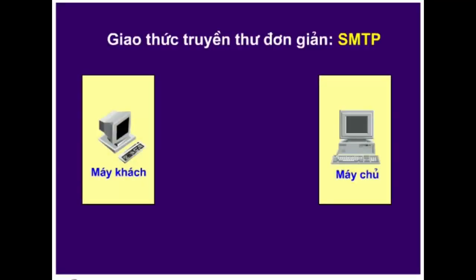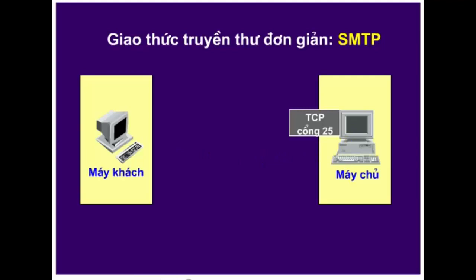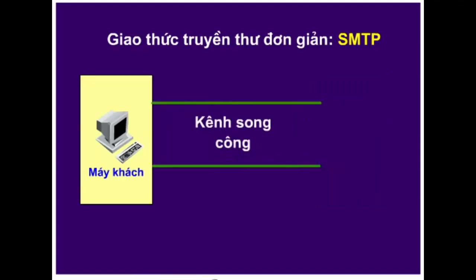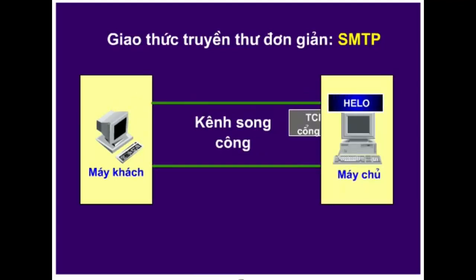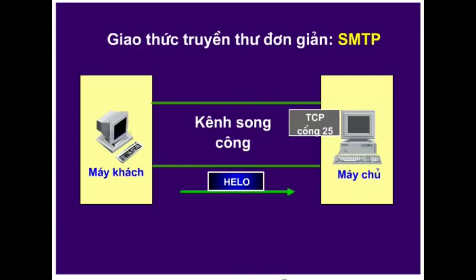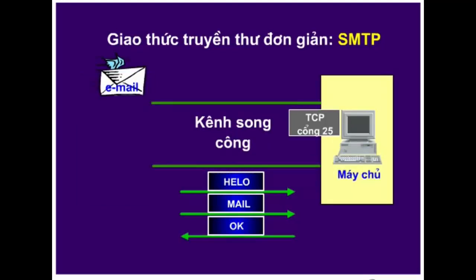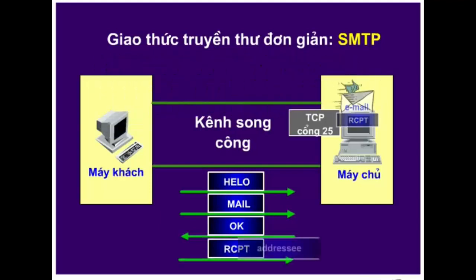Giao thức truyền thư đơn giản SMTP được dùng để truyền thư điện tử. SMTP sử dụng cổng TCP25 để thiết lập một kết nối an toàn. Kết nối này được kích hoạt bởi hệ thống thư khách. Khách thiết lập một kênh truyền thông song công với máy chủ SMTP và truyền bản tin nhận dạng Hello để bắt đầu một phiên làm việc. Sau khi kênh truyền được thiết lập, khách gửi lệnh Mail để báo cho máy chủ biết nó muốn gửi thư. Máy chủ xác nhận bằng bản tin OK. Sau đó, khách sử dụng lệnh RCPT để cho biết địa chỉ của thư.